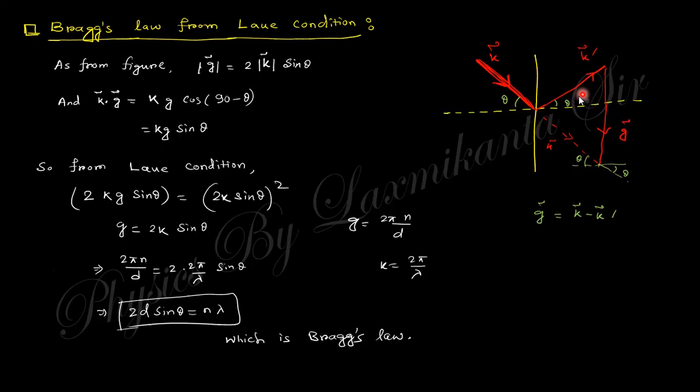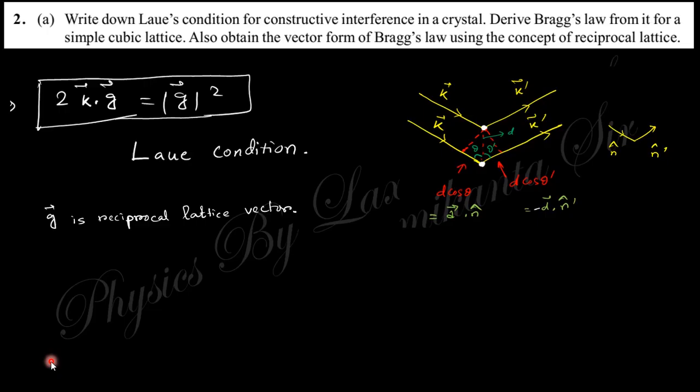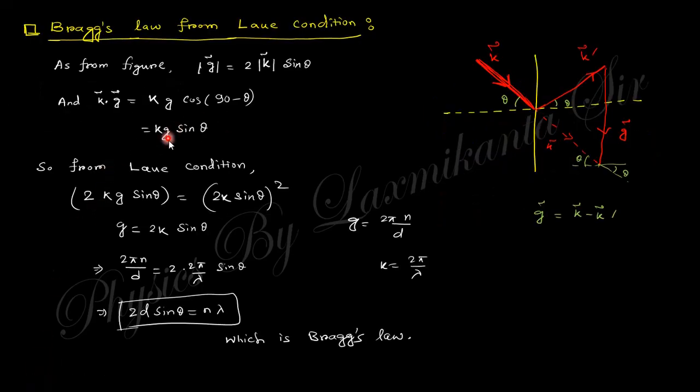So we need to find out Bragg's law from the Laue's condition. The value of g is k minus k prime. The magnitude will be 2k sin θ. k·g is k g cos(90° - θ), which equals k g sin θ. From Laue's condition 2k·g = |g|², we get 2k g sin θ = g², and from here you will easily find out Bragg's law.